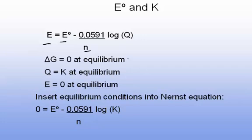But you can remember that the change in Gibbs free energy equals zero at equilibrium, and at equilibrium the reaction quotient equals K, the equilibrium constant, and at equilibrium, therefore, the cell potential E is zero.